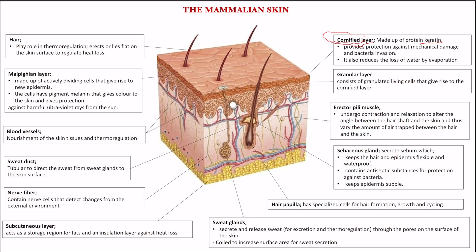Below the cornified layer, we have the granular layer, because it is made up of granulated cells — the cells have granules — and they are living cells. They are the ones that give rise to the cornified layer by dying and becoming keratinized.